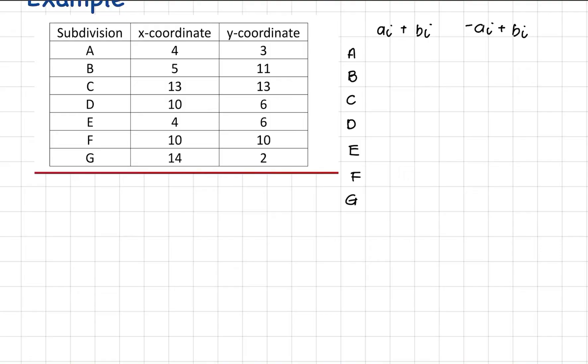The sum is just 4 plus 3, so 7. For subdivision B, that's 5 plus 11, so that is 16. 13 plus 13 is 26. For D is 10 plus 6, so 16. For E, that's 4 plus 6, so that's 10. For F, that's 20. And for G, that is 16.